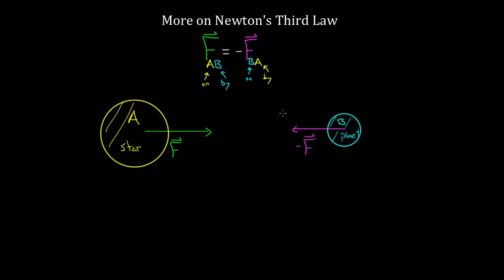People quote Newton's third law, but sometimes they don't really believe it. If this planet were a million times less massive than the star, people would want to say the star obviously pulls more on the planet than the planet pulls on the star, but that's not true according to Newton's third law. Newton's third law says they have to be the same. So if this were the Earth and this is the Moon, the Earth pulls on the Moon just as much as the Moon pulls on the Earth.